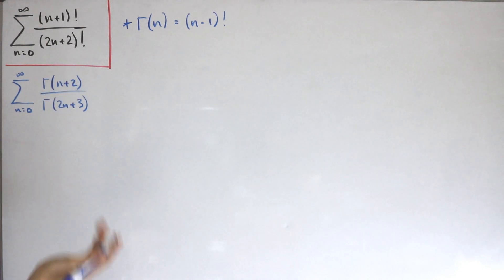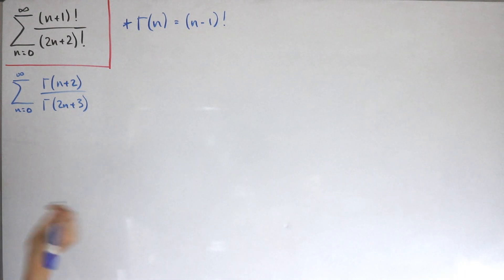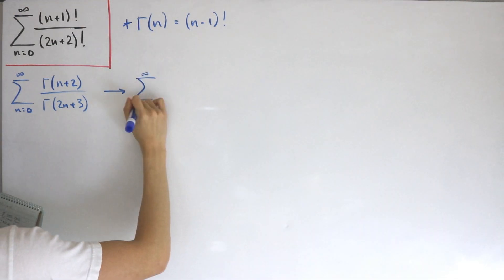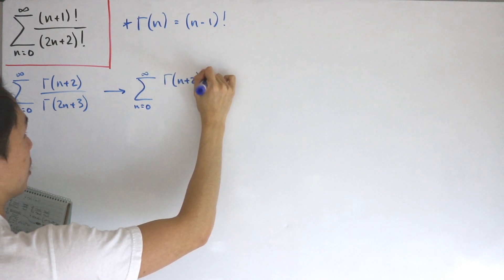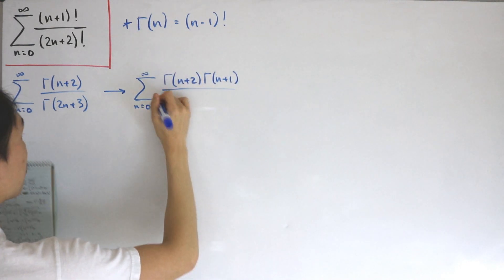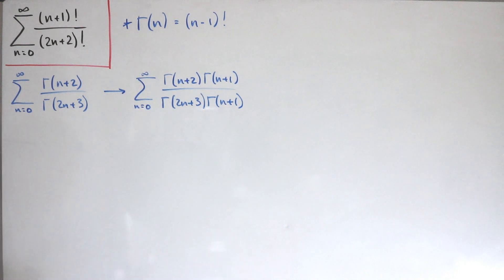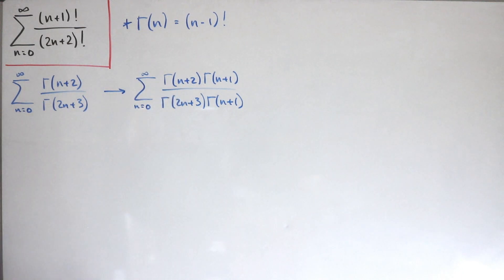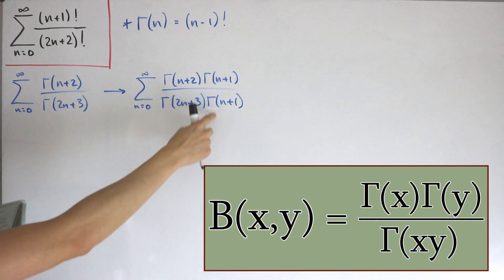Now let's do a little creativity here. We'll multiply both numerator and denominator by Γ(n+1). So we have the infinite sum from n=0 of Γ(n+2)·Γ(n+1) in the numerator, over Γ(2n+3)·Γ(n+1) in the denominator. Notice specifically the terms 2n+3, n+2, and Γ(n+1) — using the beta function property, we can replace our terms.